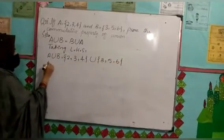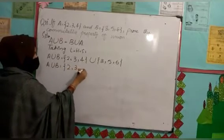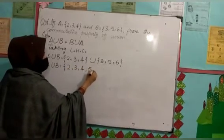For A union B, arrange the elements. {2, 3, 4, 5, 6}.